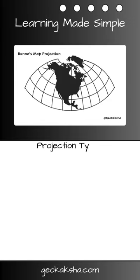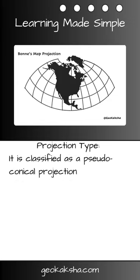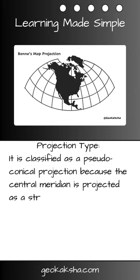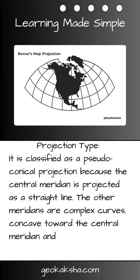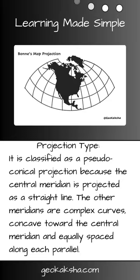Unlike some other map projections, Born's projection is a conical projection, but it is classified as a pseudo-conical projection because its central meridian is projected as a straight line. The other meridians, however, are complex curves concave toward the central meridian and equally spaced along each parallel.